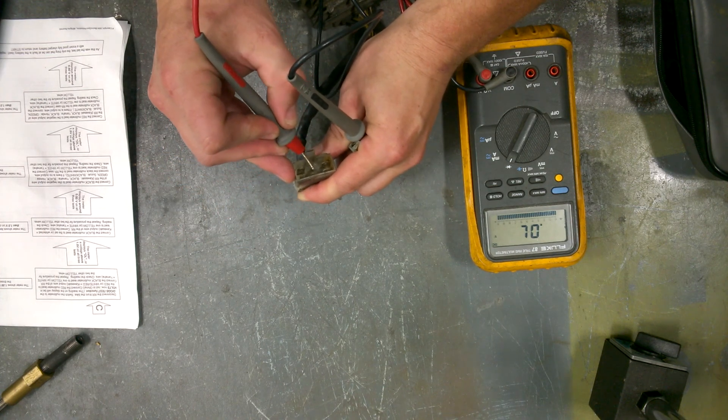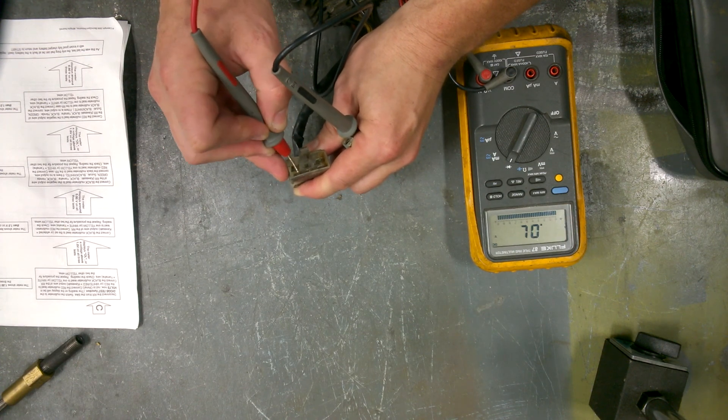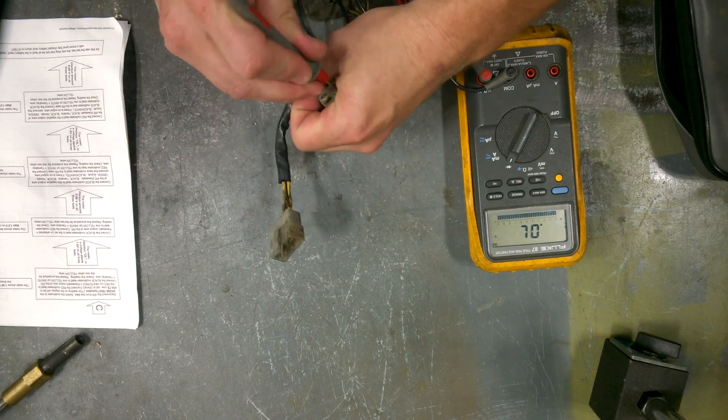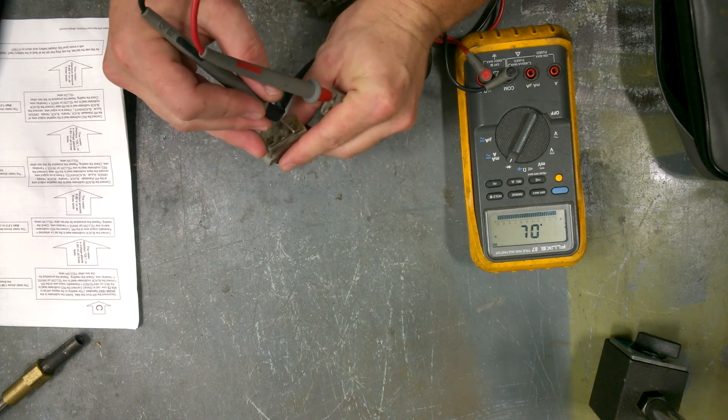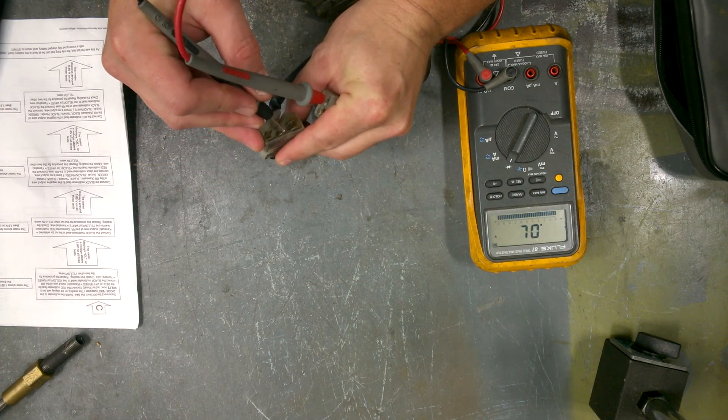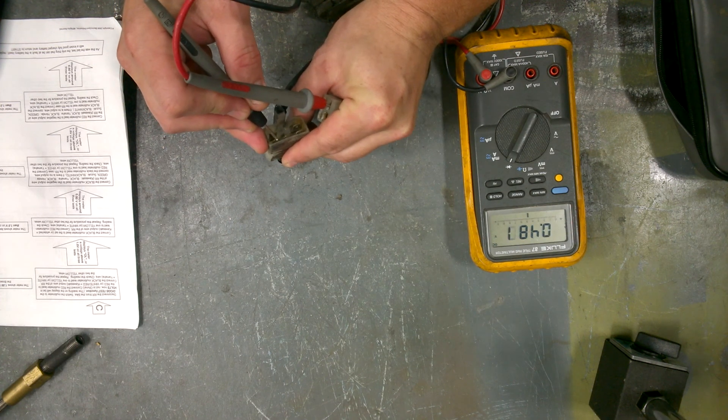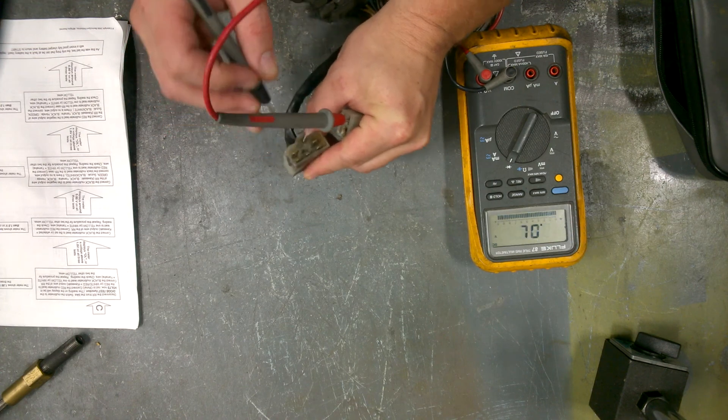So same deal. No flow, no electrons getting through the diodes the wrong direction. So let's flip her back around. Put the red lead into the green and then check 0.5, 0.5 and 0.5. And so that was a little bit low, but essentially you've got a good test.